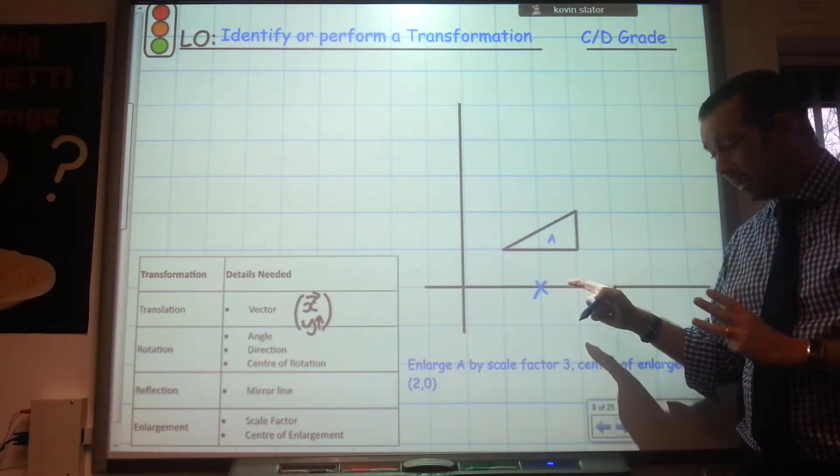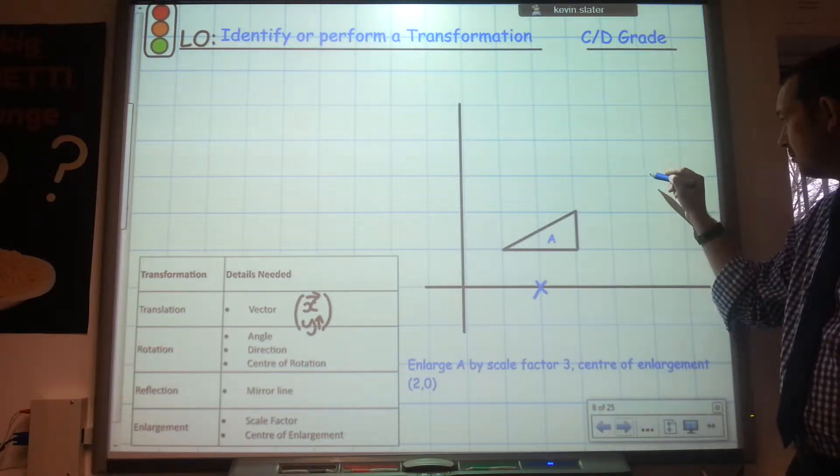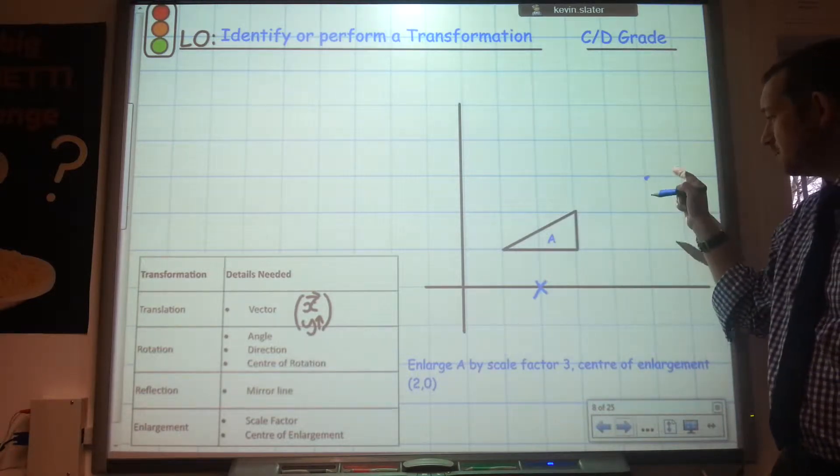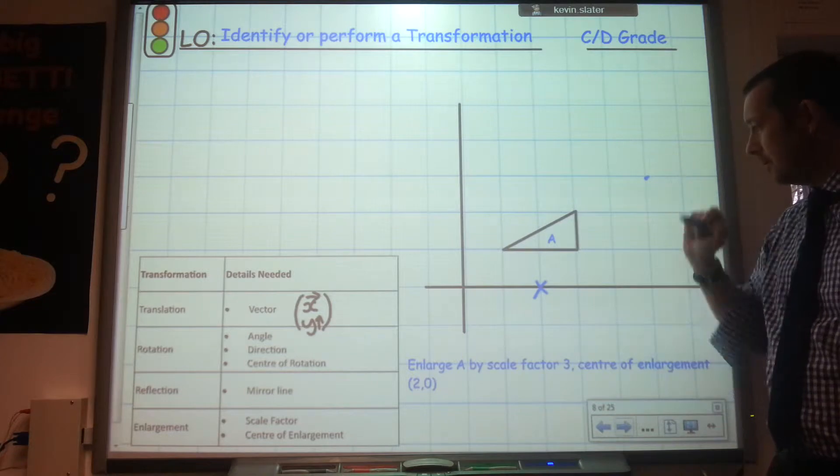So to get to this corner I've got to come along 1 and up 1. Now scale factor 3, that means I've got to come along 3 and then up 3. So everything's got to be 3 times the distance. So that corner is now going to end up there.